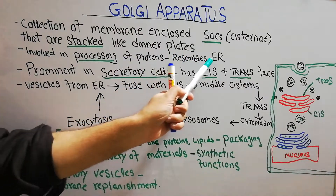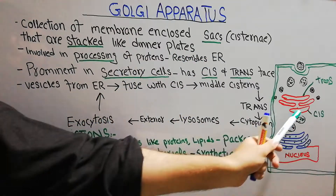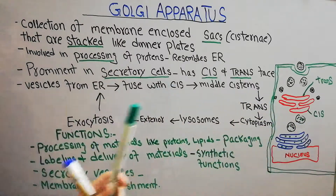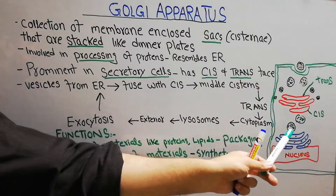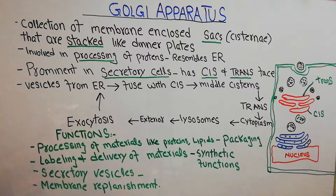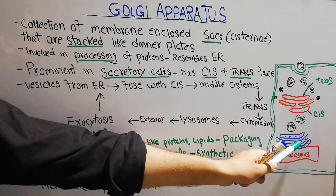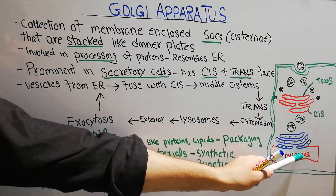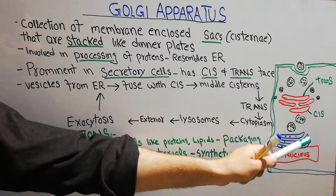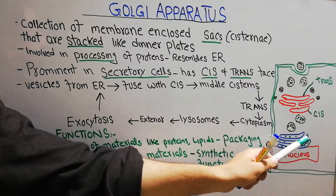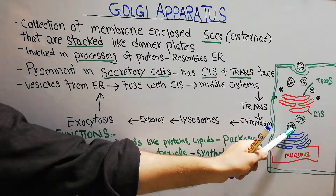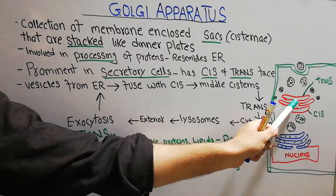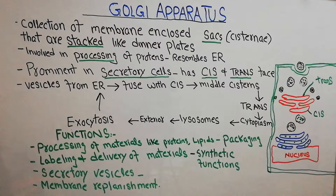The Golgi apparatus also resembles the endoplasmic reticulum — more specifically the smooth endoplasmic reticulum. There is a special sequence: the endoplasmic reticulum is connected with the nucleus, orders come from the nucleus, the endoplasmic reticulum obeys and forms lipids or proteins, and then these are transferred via vesicles to the Golgi apparatus, where processing of those proteins and substances begins.